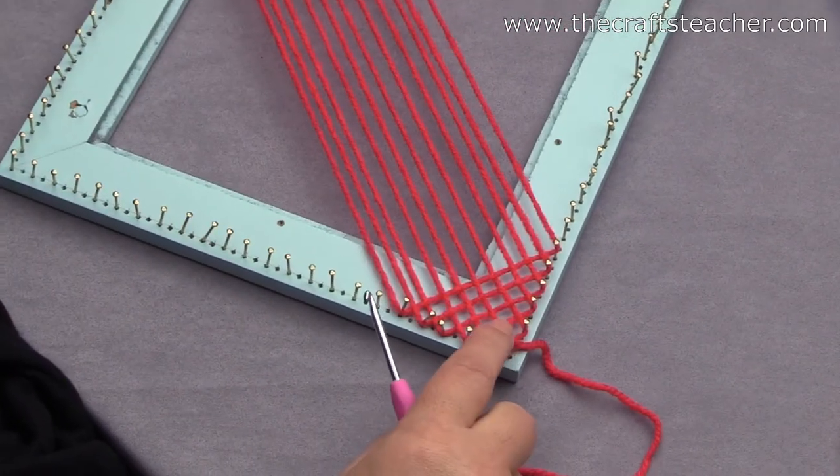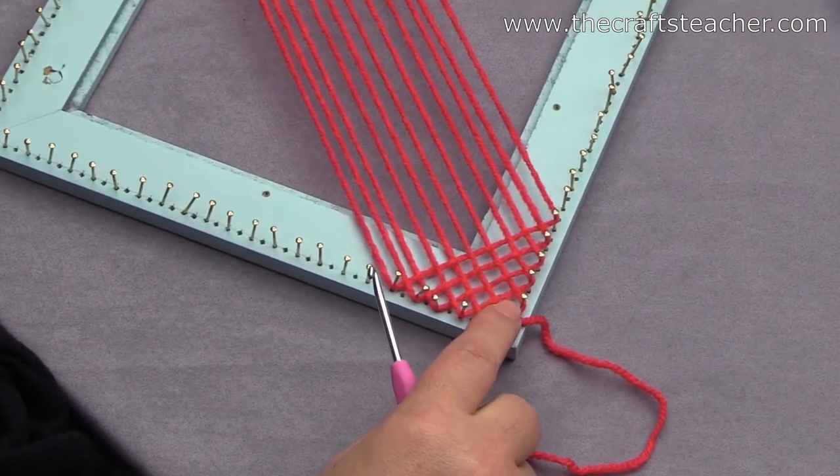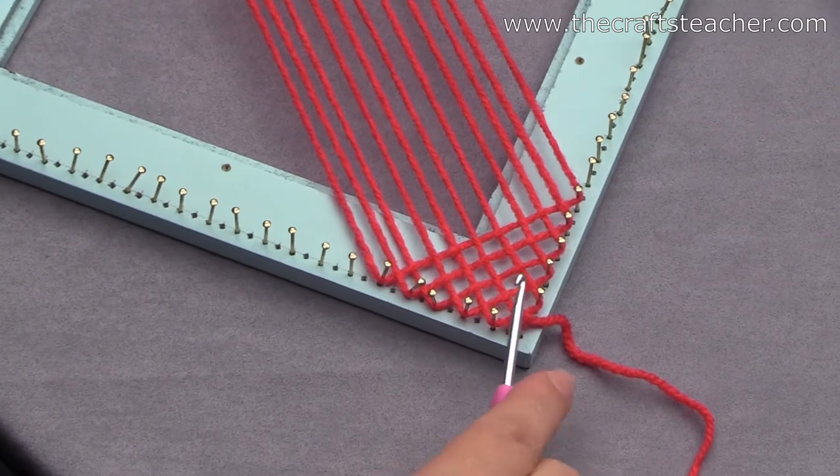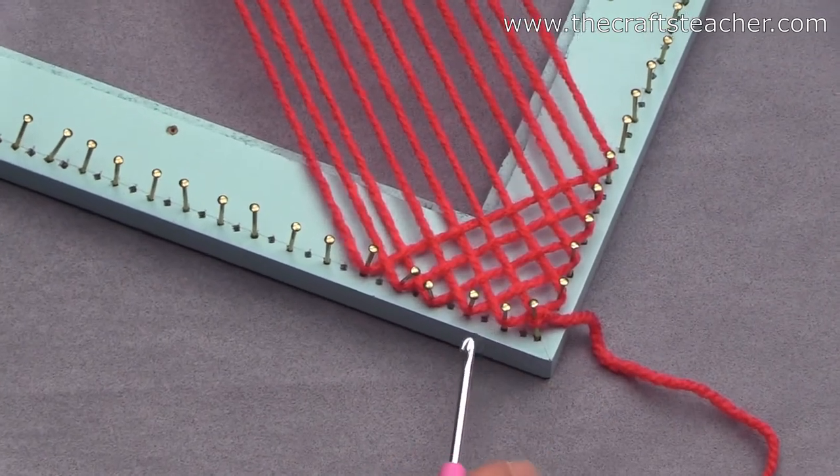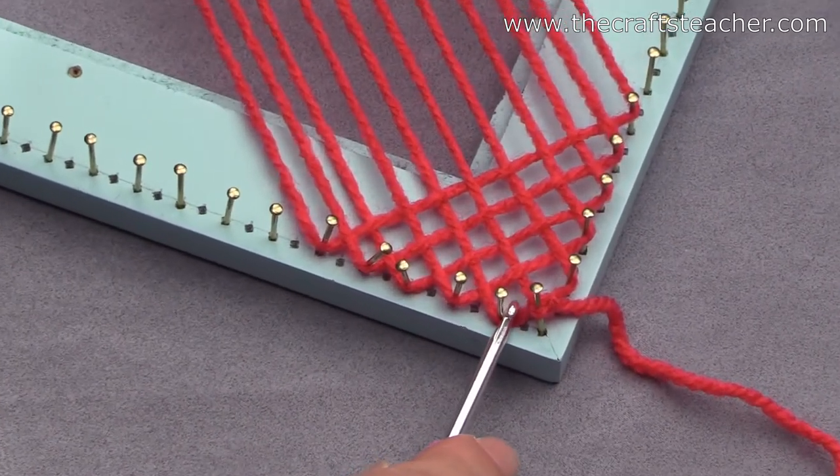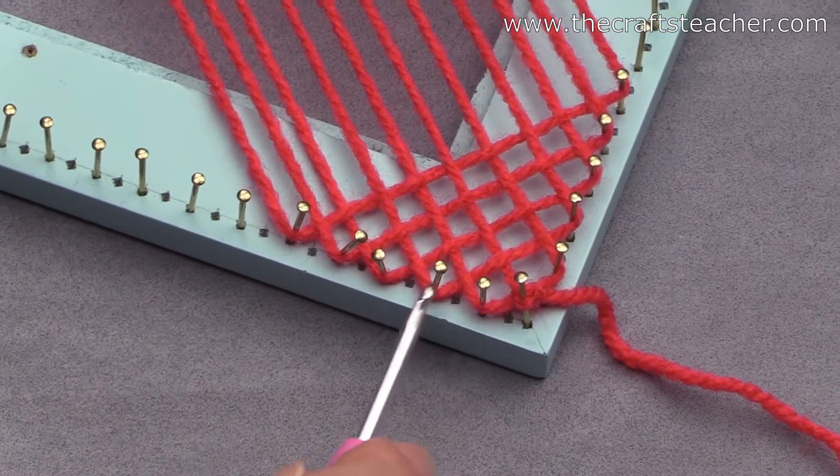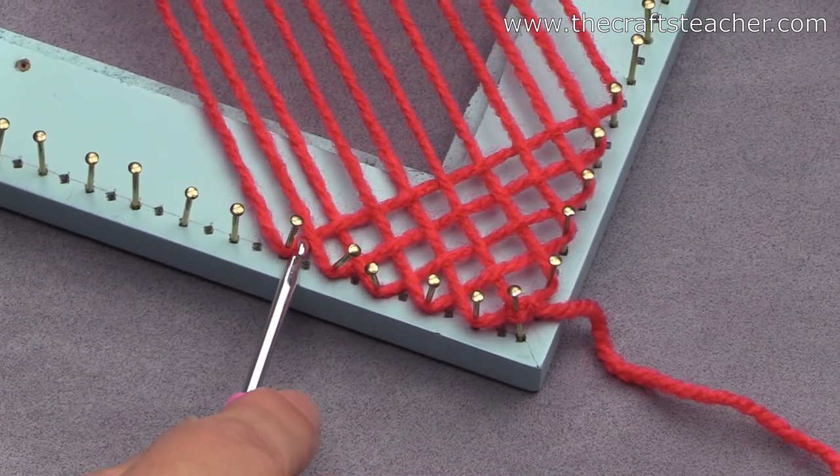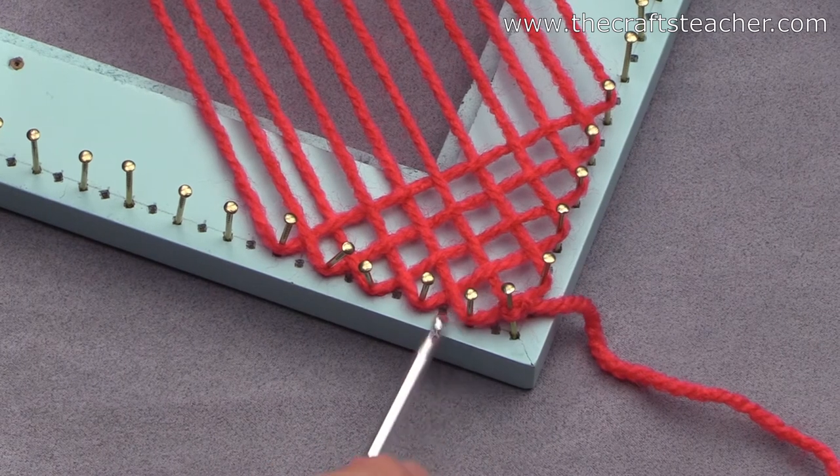First of all, I neglect the corner nails. As you can see here, you have now 1, 2, 3, 4, 5 nails that have a single thread around it.